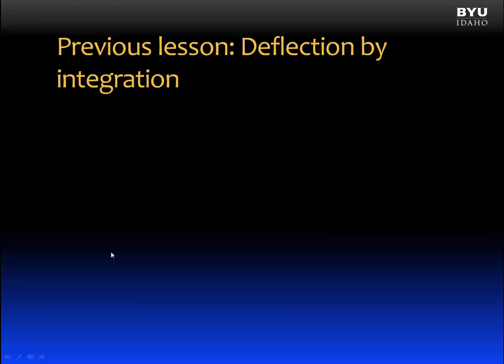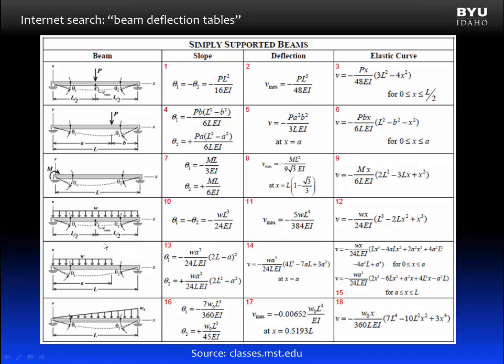In the previous lesson, we used the deflection by integration method to find equations that define the deflected shape of a beam and equations for maximum deflection in a beam. The results found using deflection by integration for various loading conditions are compiled in beam deflection tables, like the one shown. Beam deflection tables can be found in many engineering references and through a search on the internet. Deflection tables can be found for a variety of beam types. The beams shown on this deflection table are simply supported beams with supports at the beam ends. The deflection tables provide equations for beam slopes at specific points, beam deflection at specific points, and the elastic curve.